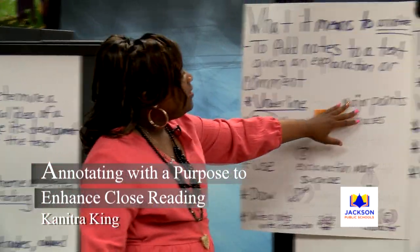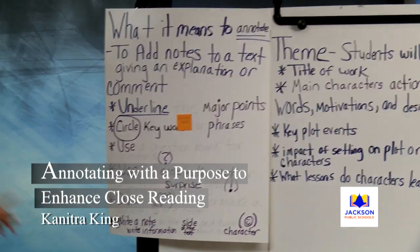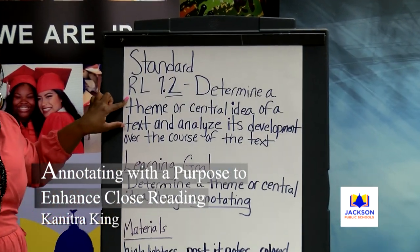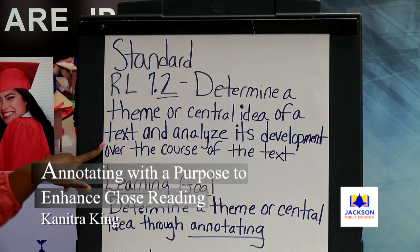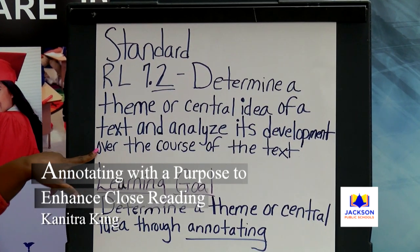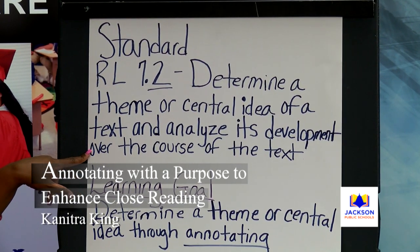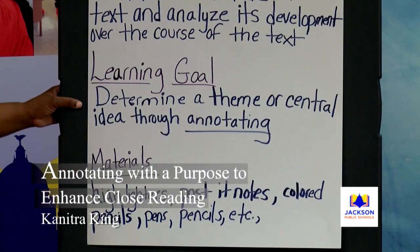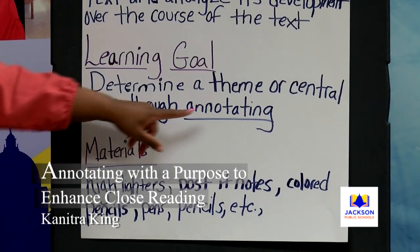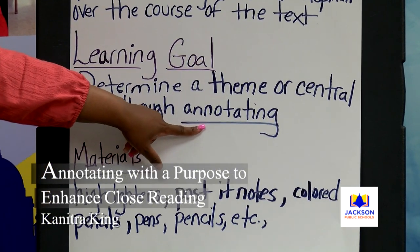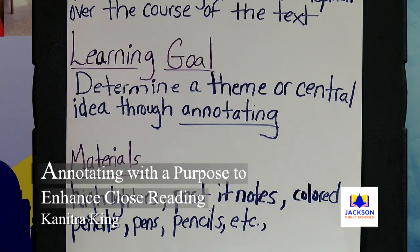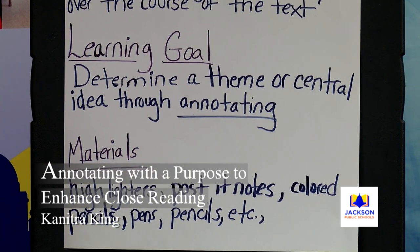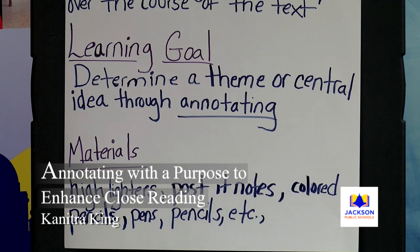These are our materials we're going to use today. My standard is to determine a theme or a central idea of a text and analyze its development over the course of the text. This will be our learning goal today — to determine a theme or central idea, but we're going to do it through annotating. We'll break that word down and get into what we're going to go through when we're learning more about annotating.